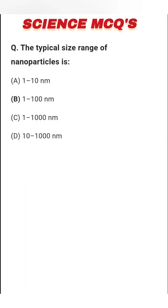The typical size range of nanoparticle is 1 to 10 nanometer, 1 to 100 nanometer, 1 to 1000 nanometer, and 1 to 10,000 nanometer. The right answer is option B: 1 to 100 nanometer. Nanoscience deals with materials between 1 and 100 nanometer, so option B is the right answer.